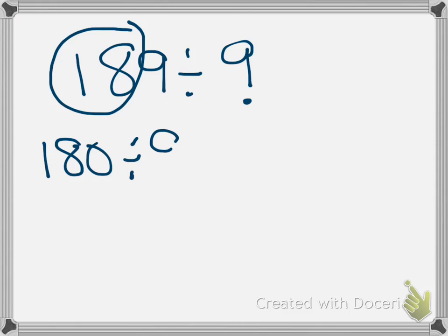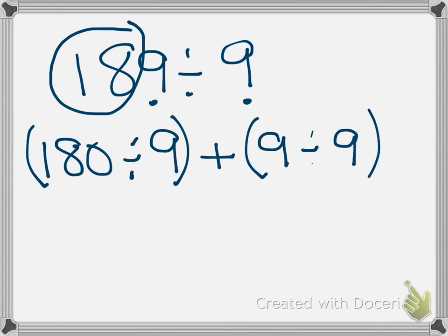But then I still have my ones place to worry about, and so I'm going to divide 9 divided by 9. And so then I look at this problem, and I say, well I know that 9 goes into 18 two times, but it's not just 18, it's 180. So I have to make sure I take care of that place value. And I have 9 divided by 9, and that gives me 1 with my final quotient of 21.